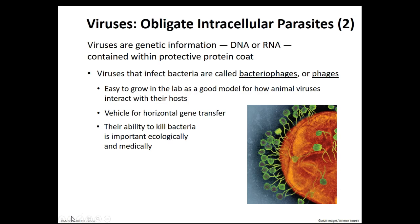Phages are also excellent vehicles for horizontal gene transfer — that's simply the transfer of genetic information from one bacterial cell to the next, not from one bacterial cell to an offspring or daughter cell. Their ability to kill bacteria is also important. Without them, our environment would be so overrun with bacteria that it could cause serious implications for not only humans, but all life.